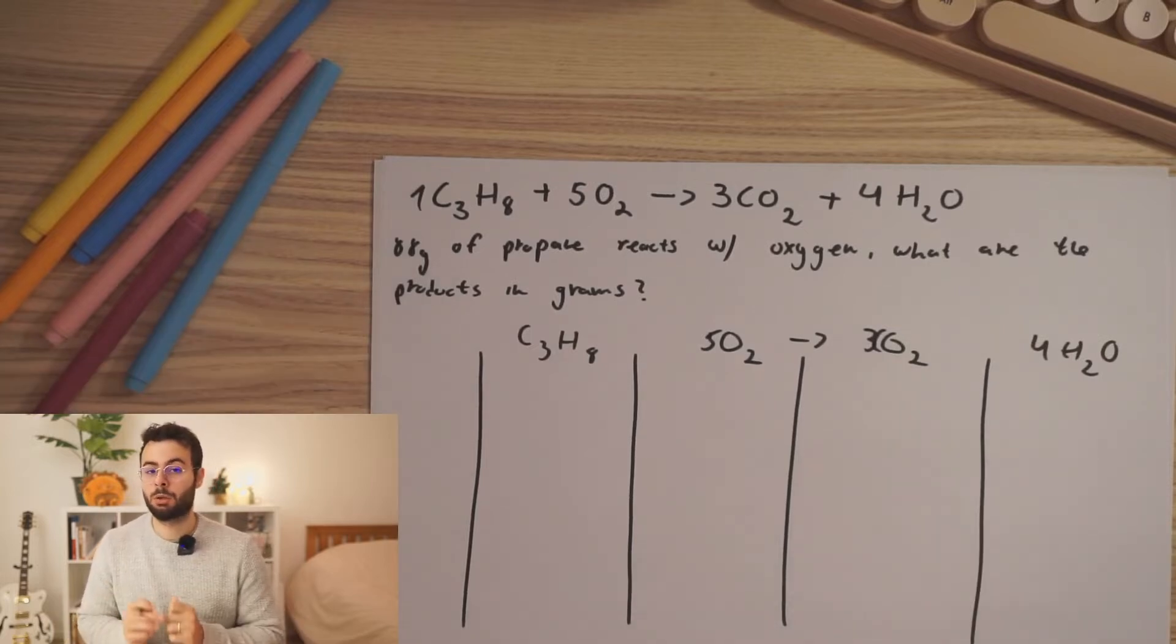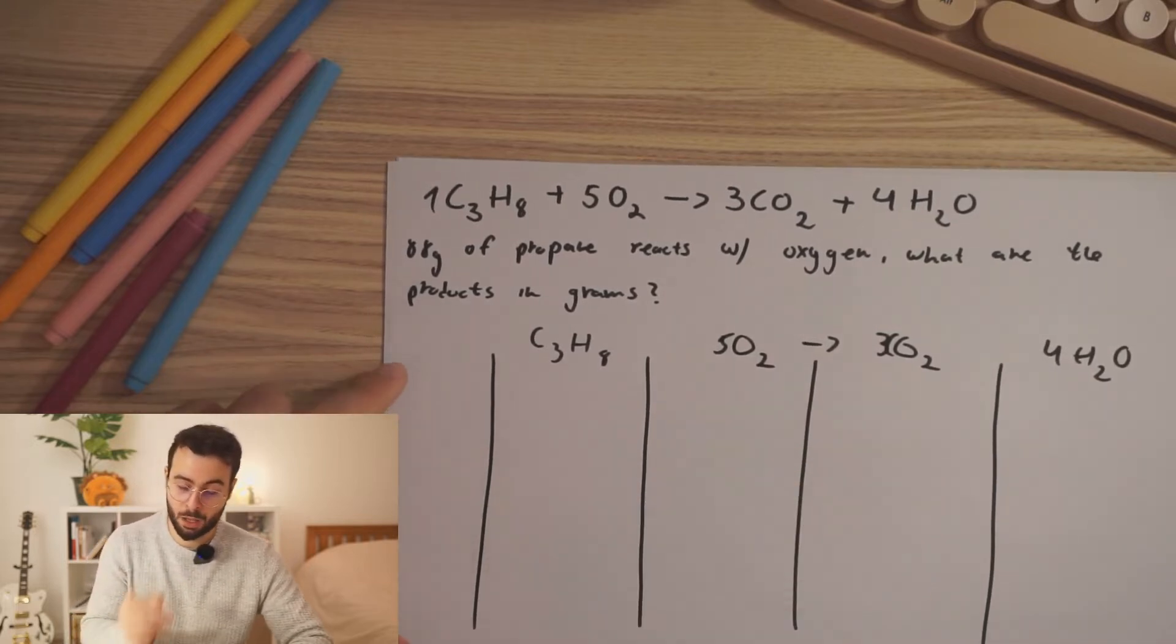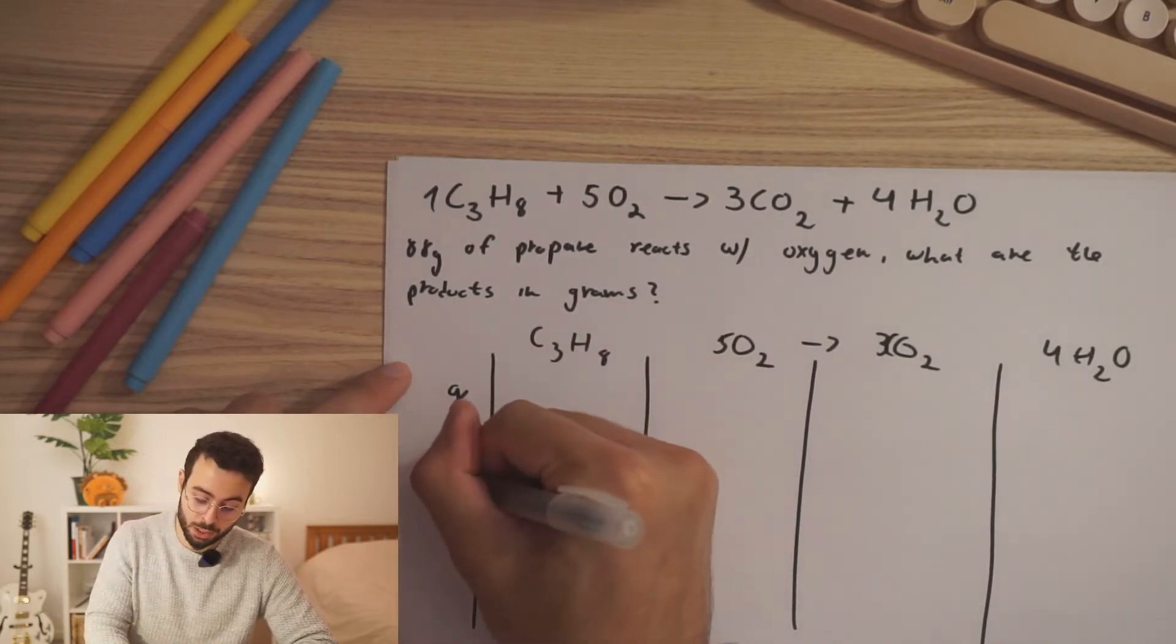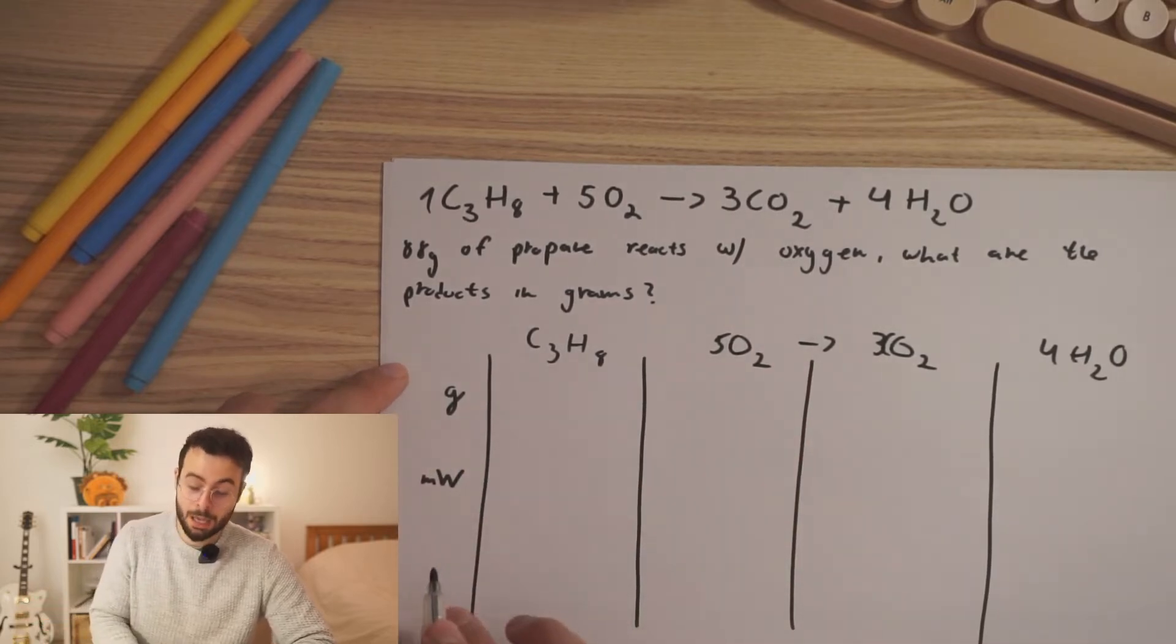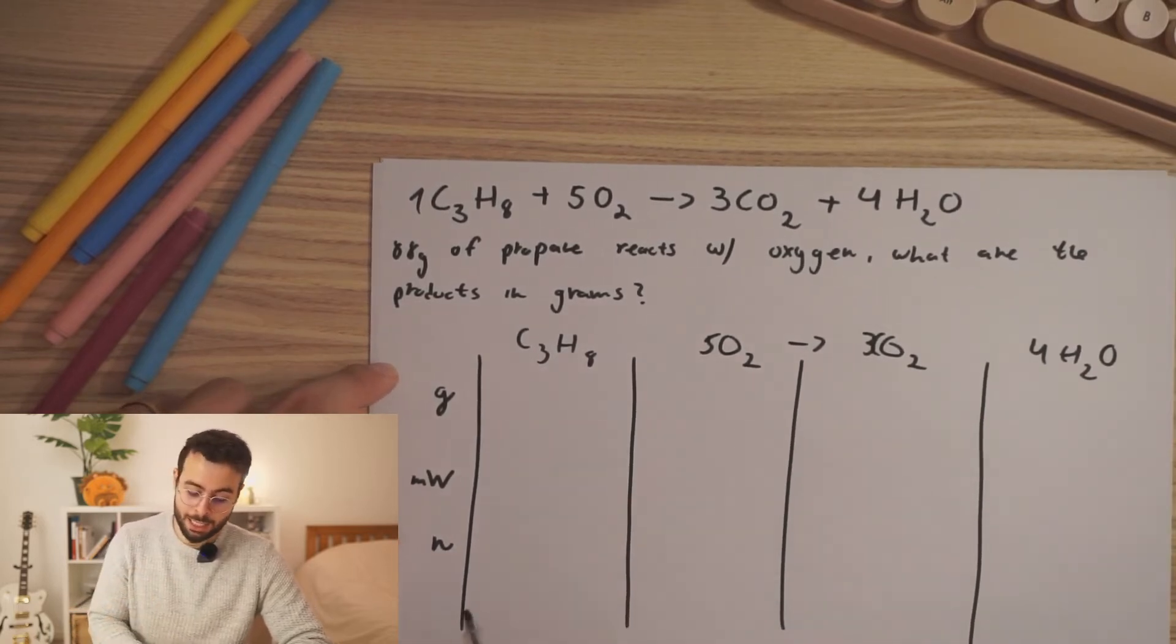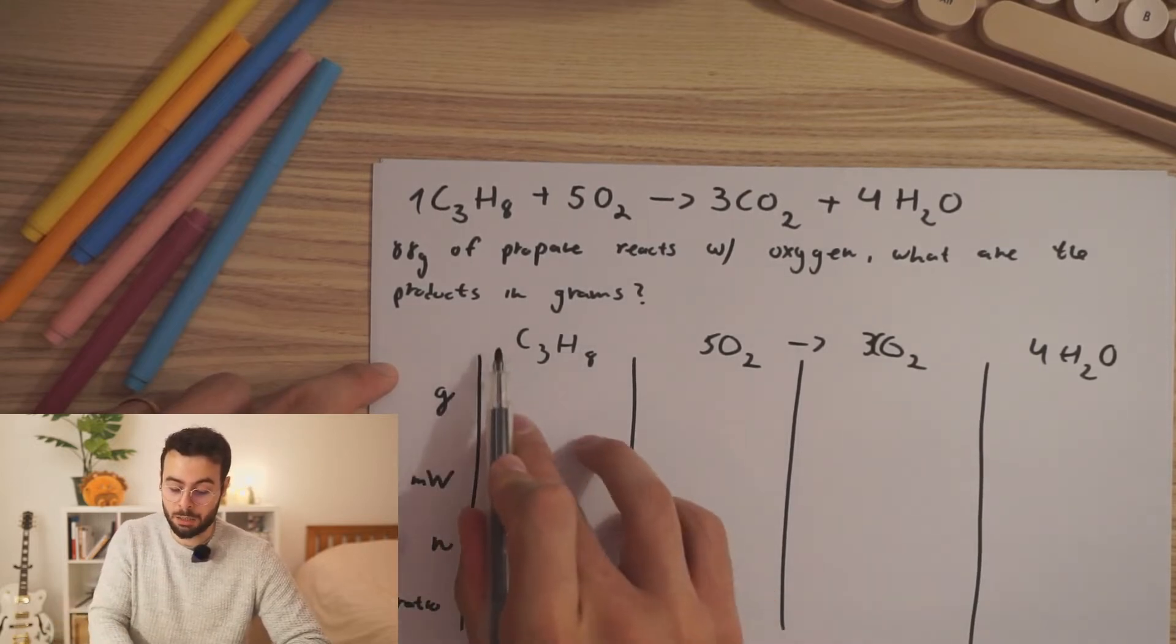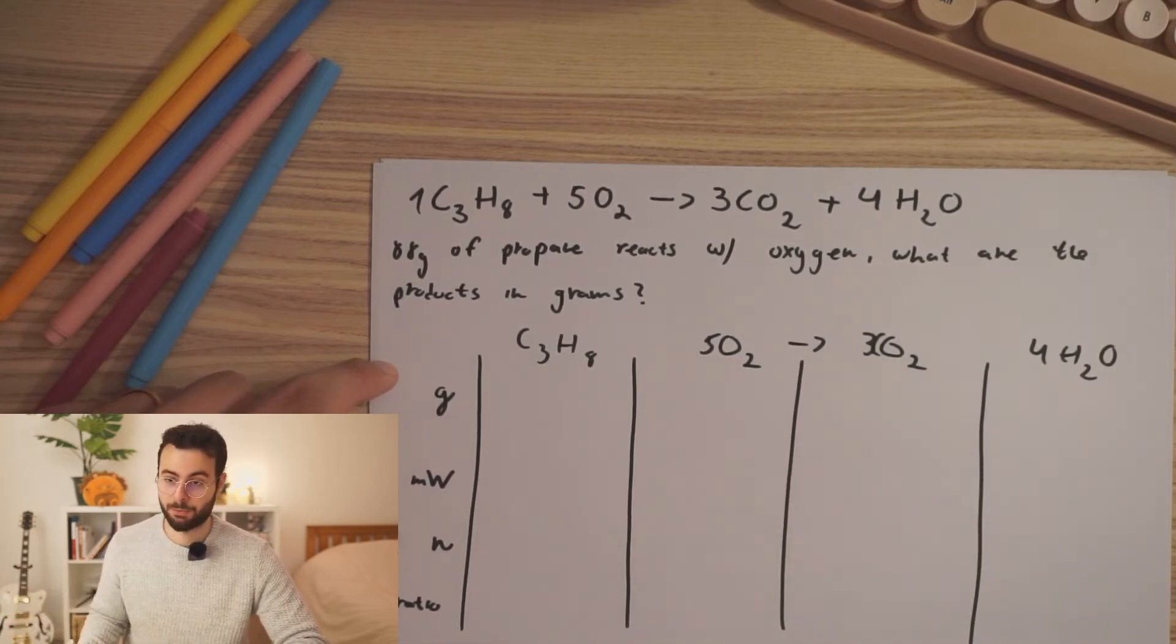What do we need to do in order to find everything in this question very easily? We will need to write a few things in the table itself. The first thing would be the grams. The second thing would be the molecular weight, which we can easily find out just by using the periodic table. The third thing would be the moles, which we aren't given, but we can easily find it using the following table. And the last thing would be the ratio, which means how many moles we have compared in relation to each other, the things in the reaction itself.